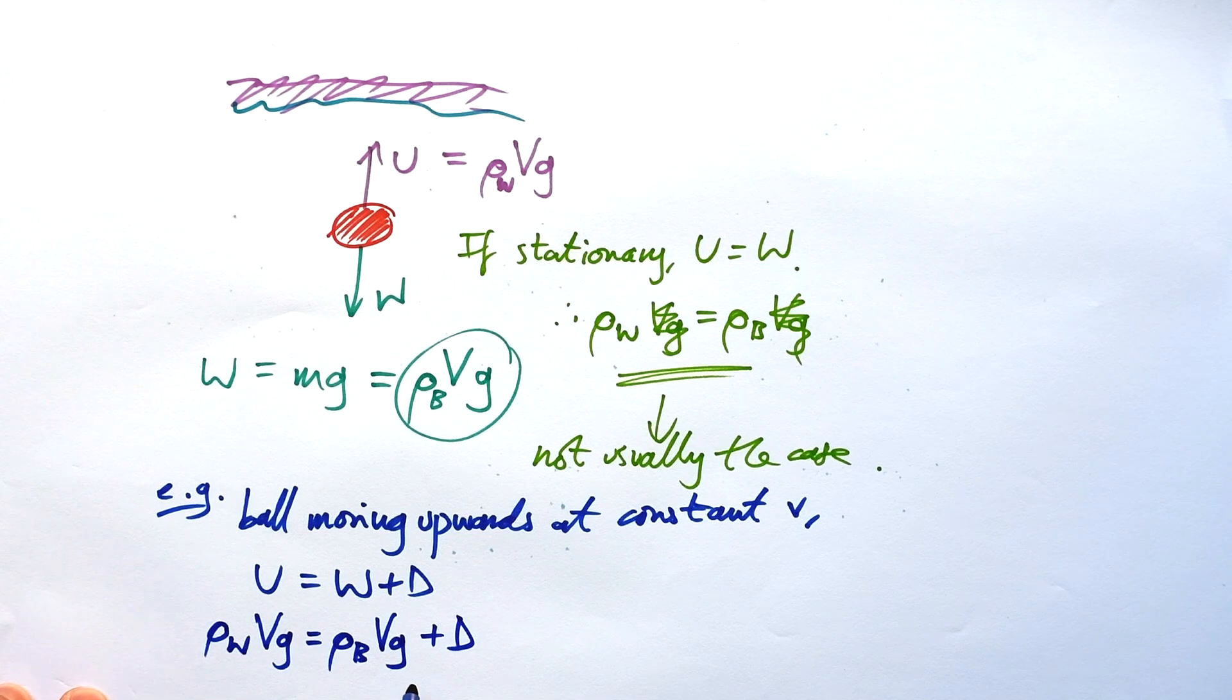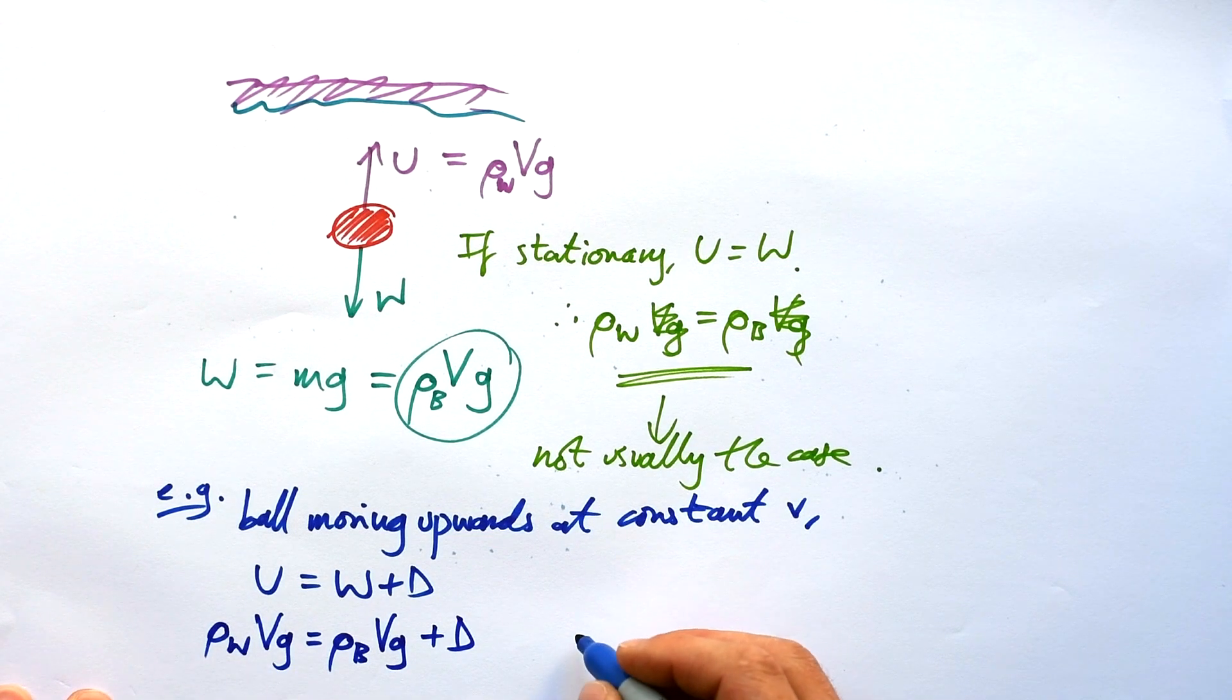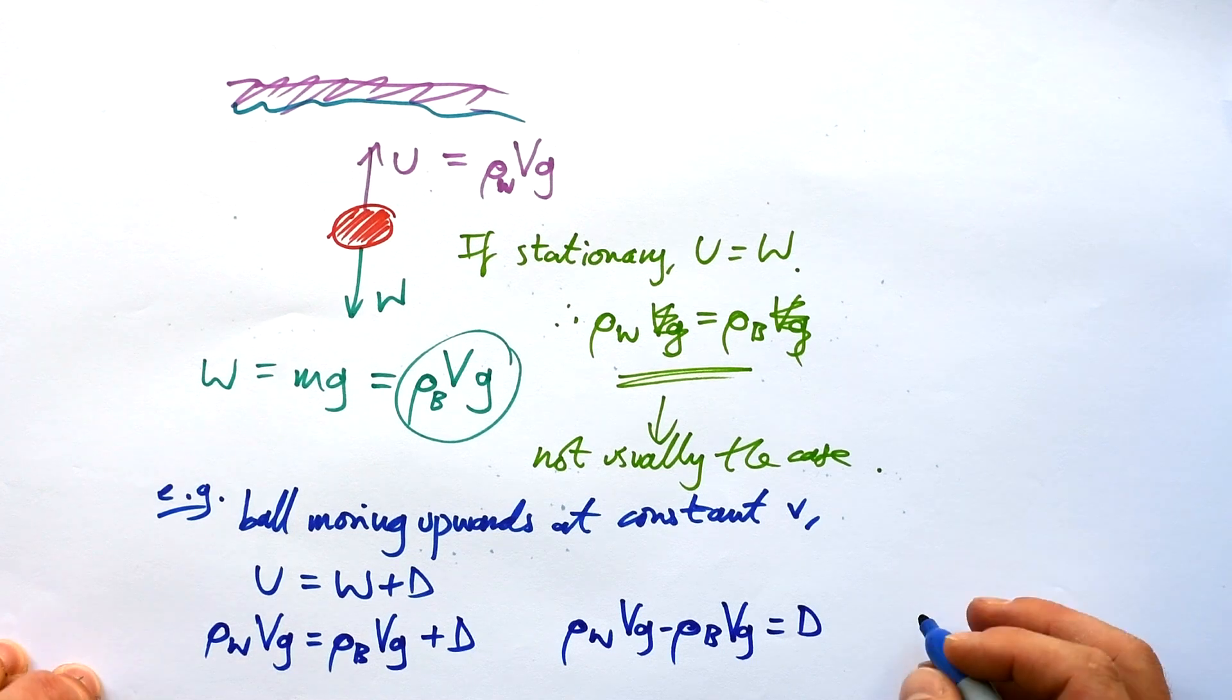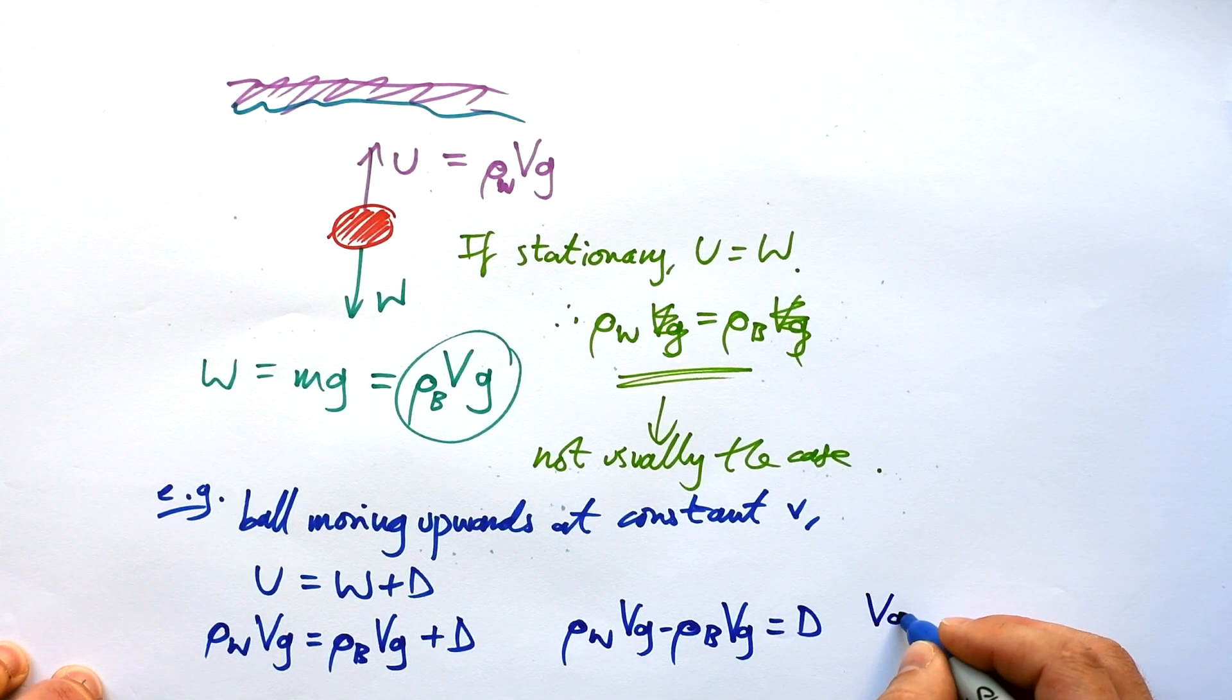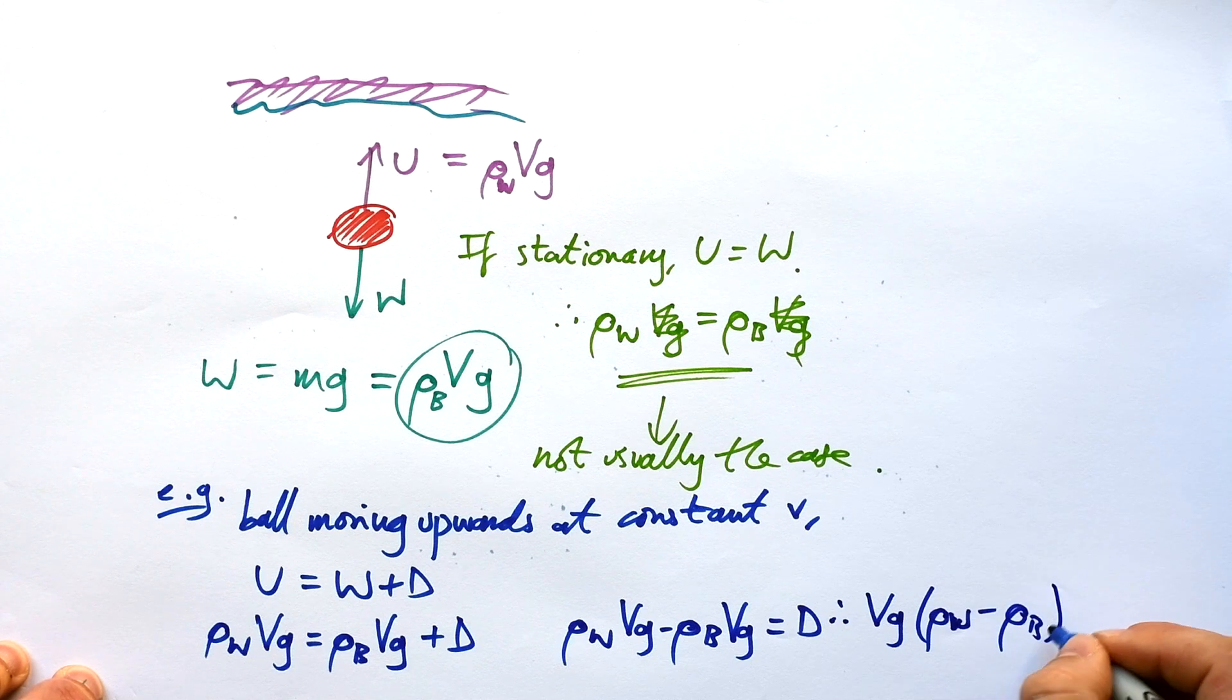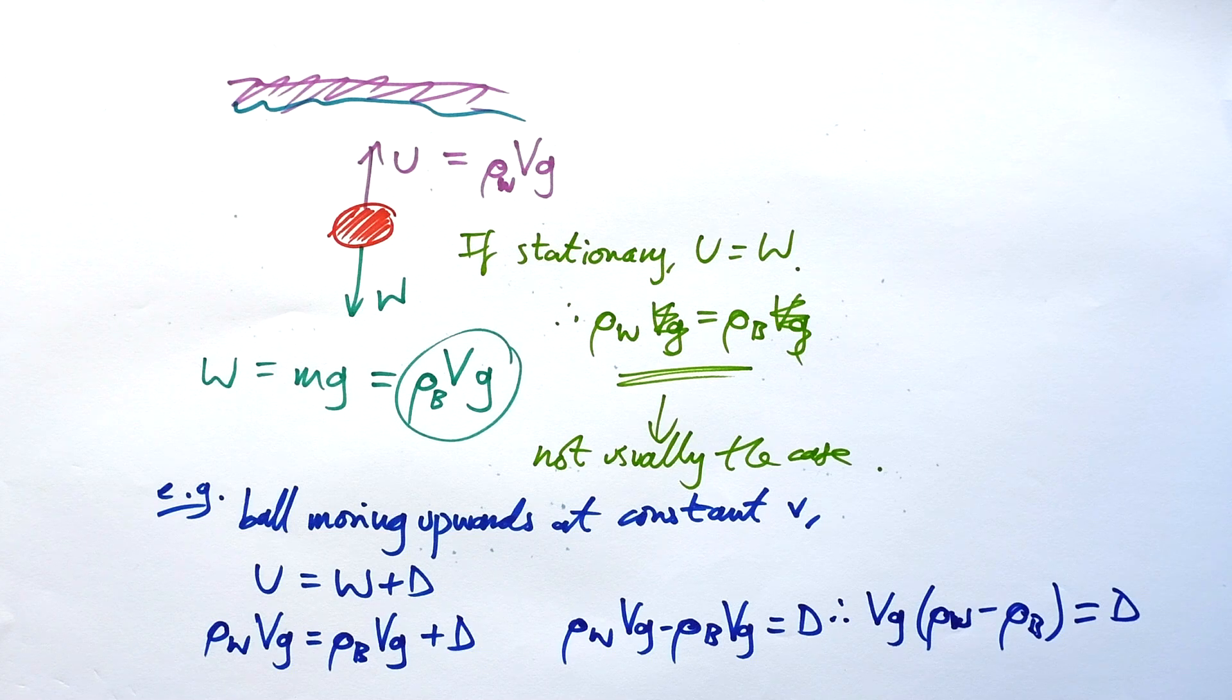Then what you can do is get all your Vs and gs on the same side. So, we have ρ_W Vg minus ρ_B Vg is equal to D. And then we can factorize, so we can take Vg out. And this is quite often the way that questions will go. We'll end up with one density take away the other.